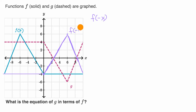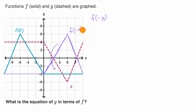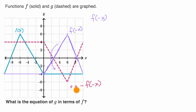That doesn't quite get us to g, but it gets us closer, because if we take the reflection of f of negative x about the x-axis, it looks like we get to g. How do you reflect something about the x-axis? You multiply the entire function by a negative. So we could say that g is equal to the negative of f of negative x — we're doing both reflections: flipping over the y-axis and flipping over the x-axis to get to g.